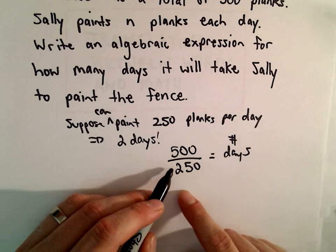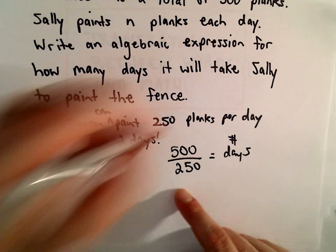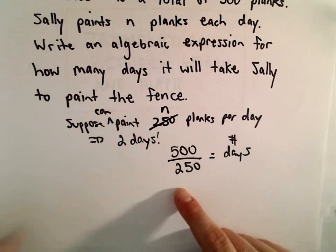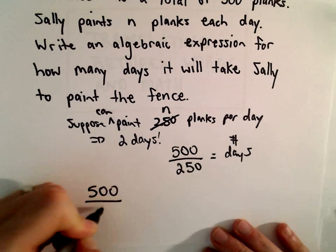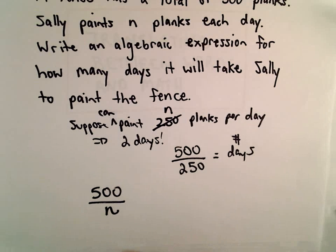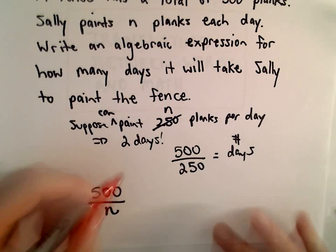Well, okay, so instead of using 250, that was a very specific number, if she paints n planks per day, we would just do the same thing. We would take 500 and divide it by n, and that would give us our expression.